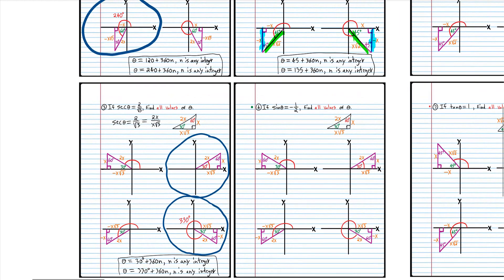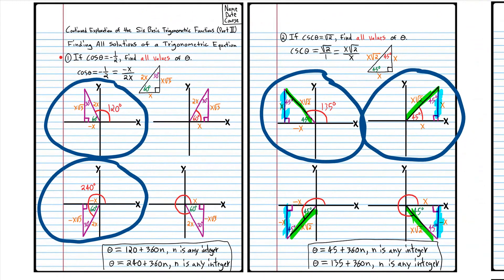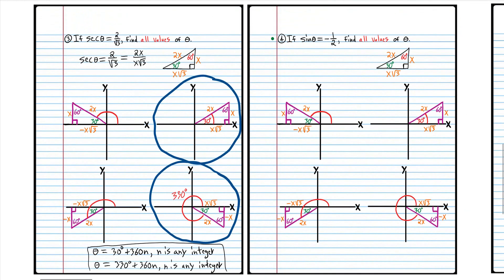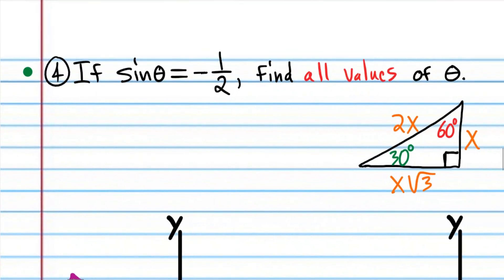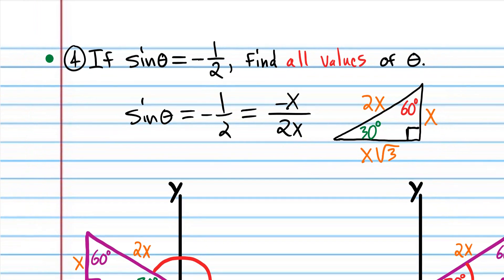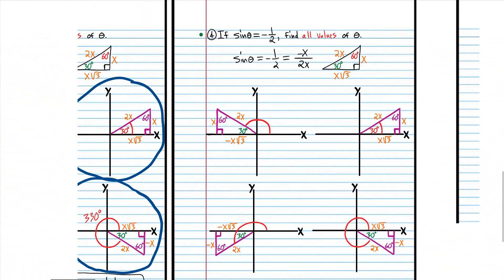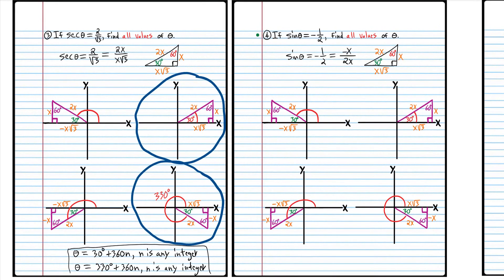Now try problem 4 on your own: find all values of theta such that sine theta equals negative one-half. Start by recognizing this as a special ratio, identify the reference angle, then consider those four triangles with the same reference angle.